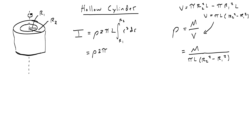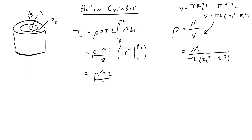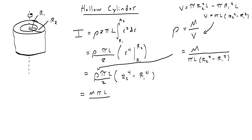We integrate from r1 to r2 instead of 0 to R. Rho times 2 pi l stays constant. Integrating r cubed gives one-fourth r to the fourth, evaluated from r1 to r2. Combining one-fourth and 2 gives one-half. Evaluating gives rho pi l over 2 times (r2 to the fourth minus r1 to the fourth). Substituting rho equals M over pi l (r2 squared minus r1 squared) gives M pi l over 2 pi l (r2 squared minus r1 squared), all multiplied by (r2 to the fourth minus r1 to the fourth).